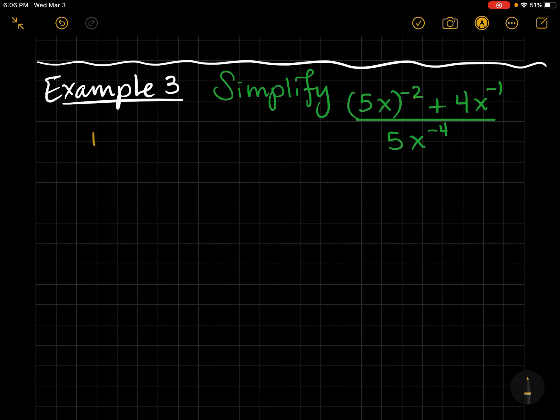So, in the numerator, that's going to become 1 over 5x squared. See, it's in parentheses, so the negative 2 applies to the 5 and the x.